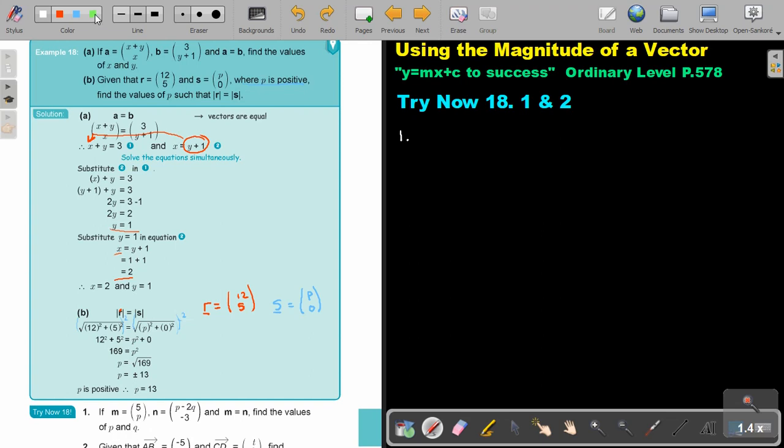Now don't forget, let's just rewrite it first. What was M? It was 5P. What was N? It was P minus 2Q and negative 3.